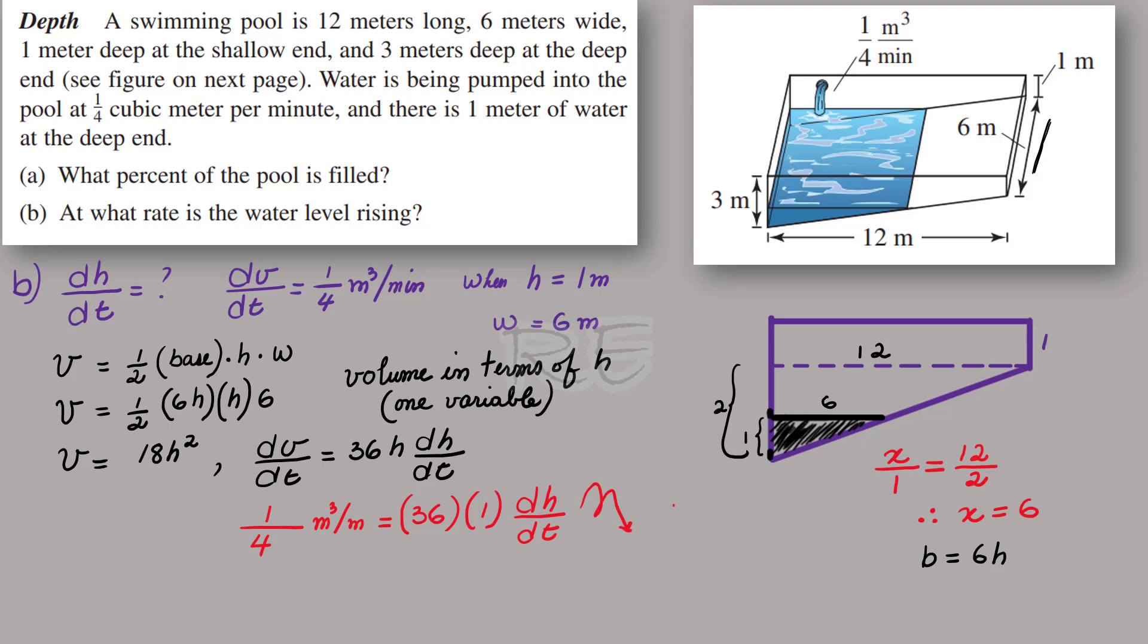We're going to divide both sides by 36 to get dh/dt. We'll get one-fourth times one over 36, and 36 times one over 36. Therefore, dh/dt is equal to 1 over 144 meter per minute.